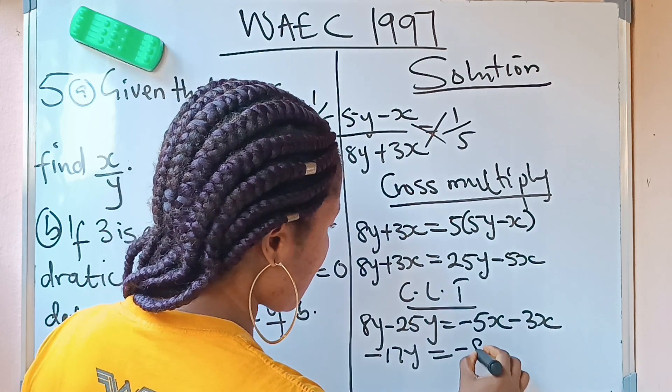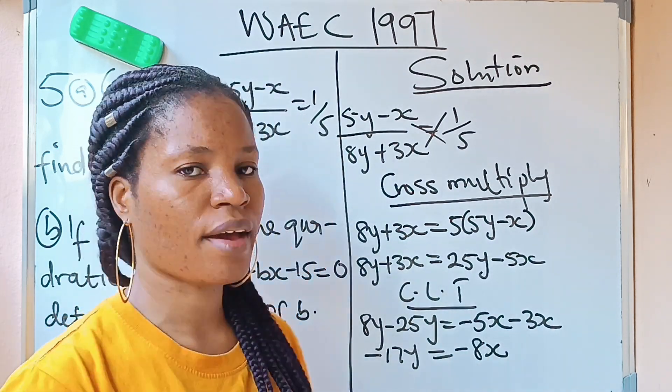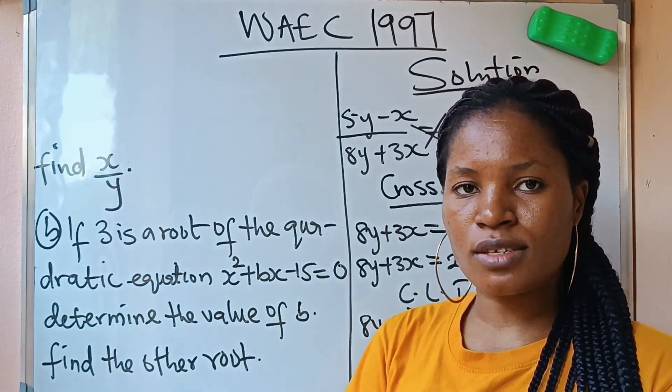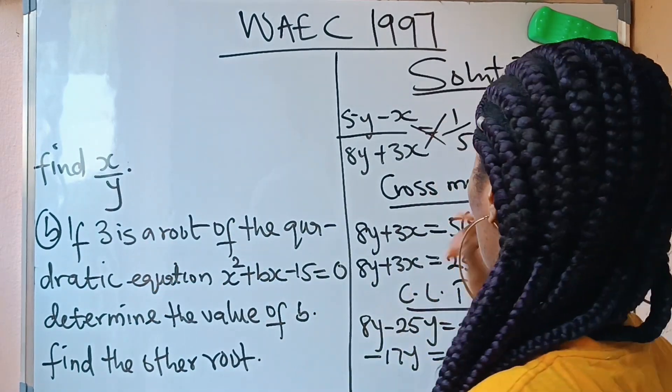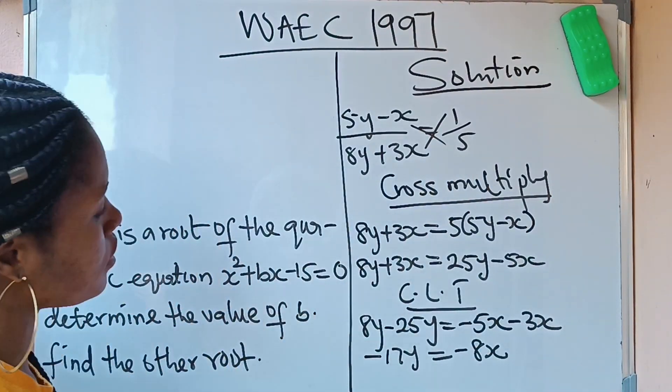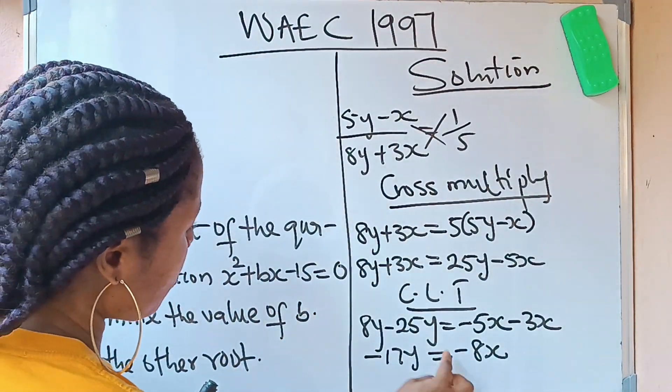So notice that we are asked to find x/y, not x or y, but x/y. So we are going to have -17y = -8x.